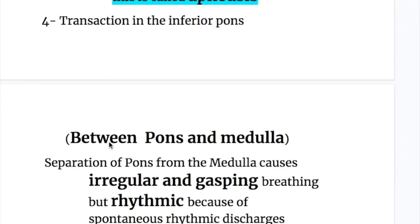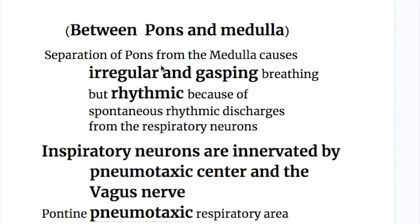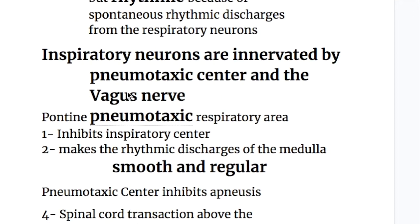Transection in the inferior pons, between pons and medulla, separates the inspiratory neurons in the medulla from the pneumotaxic center. This causes irregular and gasping breathing, but it is still rhythmic because of spontaneous rhythmic discharges from the respiratory neurons. The inspiratory neurons are innervated by the pneumotaxic center and the vagus nerve, both of which inhibit them. The pontine pneumotaxic respiratory area inhibits the inspiratory center.